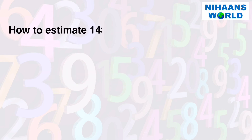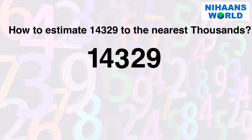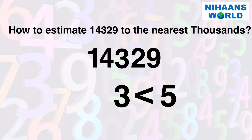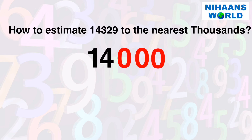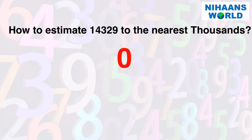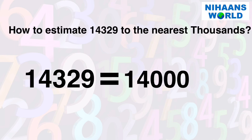How to estimate 14329 to the nearest thousands? The given number is 14329. Its digit at the hundreds place is 3, which is less than 5. So we replace the hundreds, tens, and ones digits by 0 and keep the other digits as they are. So 14329 rounded off to the nearest thousand is 14000.